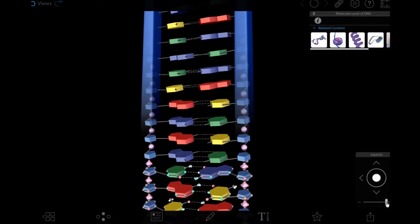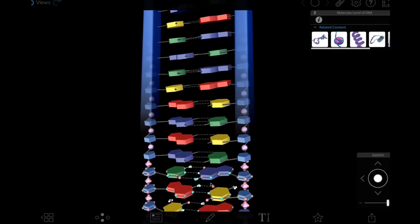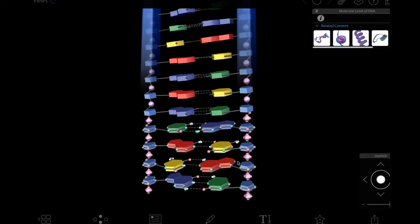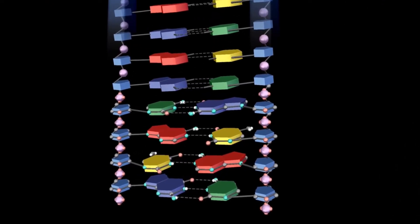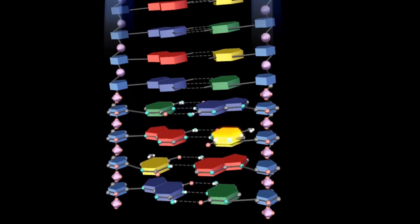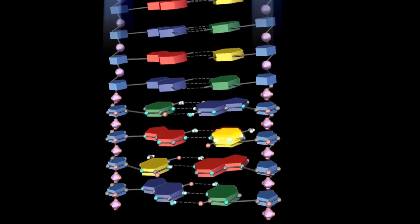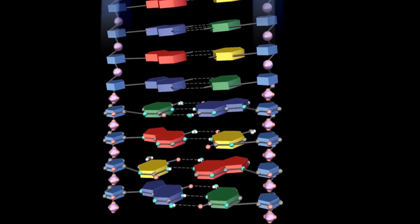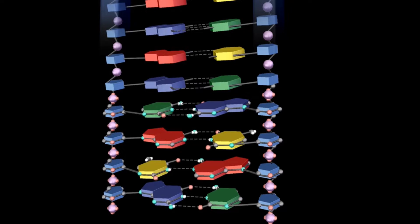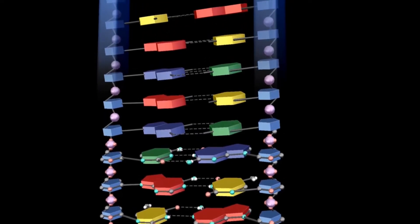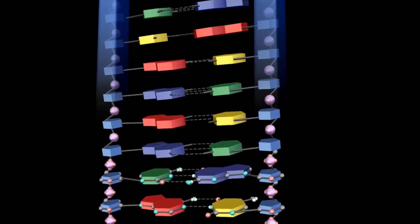The DNA contains the code for your body, but what is that code really? Let's unzip the DNA. Remember those bases from the previous video — adenine, cytosine, guanine, and thymine? Those bases create the code, and since a gene is a sequence of a lot of bases, there are a lot of possible codes.